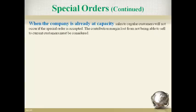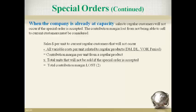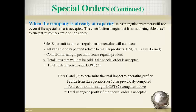When the company is already at capacity, sales to regular customers cannot occur if the special order is accepted. The contribution margin lost from not being able to sell to current customers must be considered. Use the contribution margin income statement to calculate the contribution margin that will be lost from the units that won't be sold to regular customers — those units equal the units sold in the special order. The profits from the special order are netted against the lost contribution margin from not selling units to regular customers, giving the net total change to profits because of the special order.